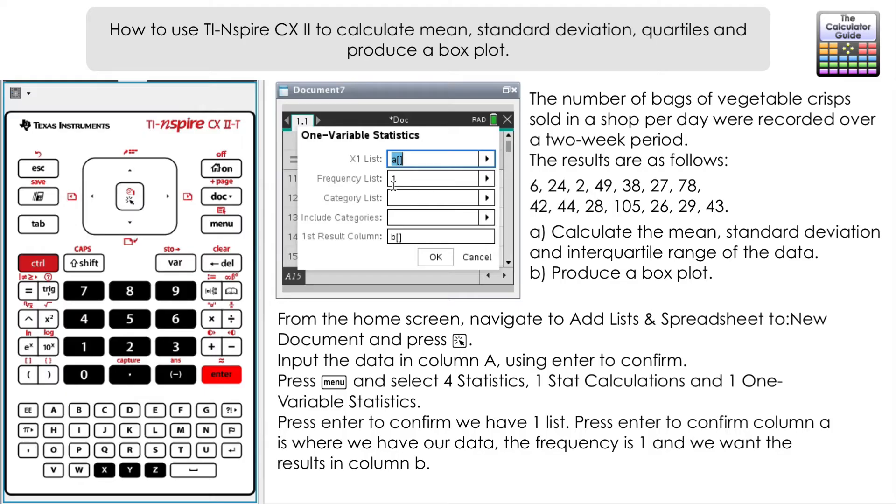Each number occurs one time. Scrolling down here, the results that we're going to get we're just going to paste them in column B because that's the next available column for us. It's been filled in by default so we will just leave it as that. Let's just press enter to confirm this.